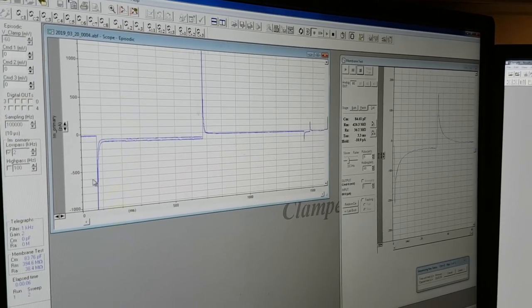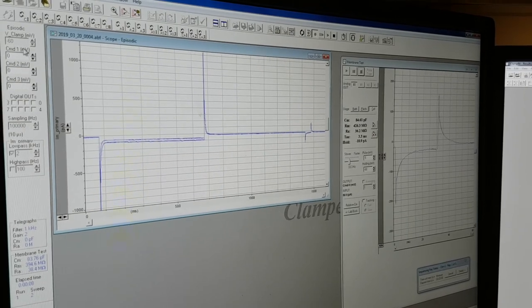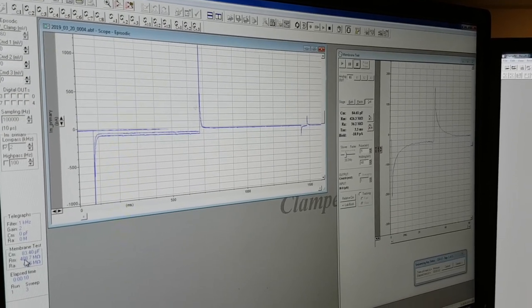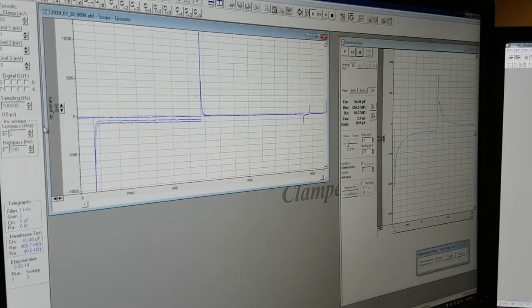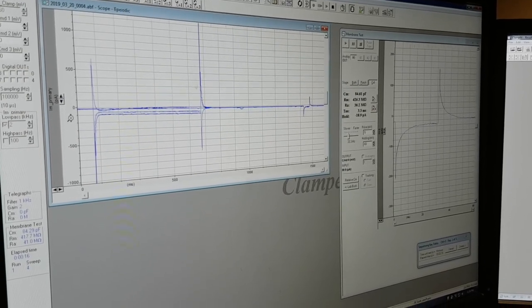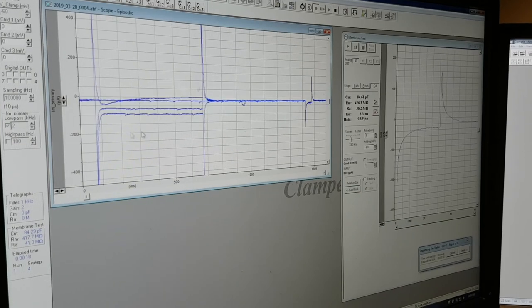Notice that as this IV curve is running, we'll start to see small, miniature excitatory postsynaptic currents occurring.